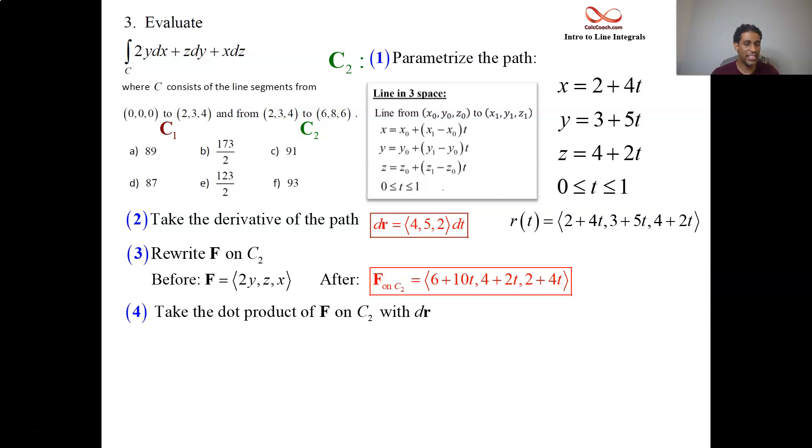4 times the quantity of 6 plus 10t, 5 times the quantity of 4 plus 2t, 2 times the quantity of 2 plus 4t. Multiply it all out. Combining like terms. Let me just double check the math. 24 plus 40t, yes. 20 plus 10t, yes. 4 plus 8, okay, good math here. So we have 48 plus 58t. That's what we integrate from 0 to 1.